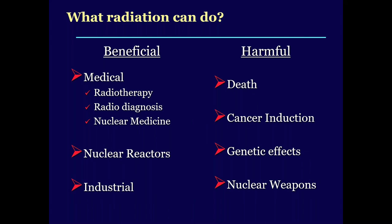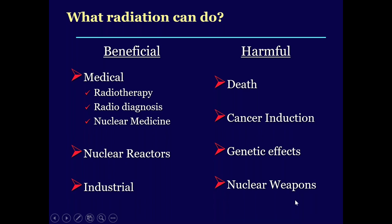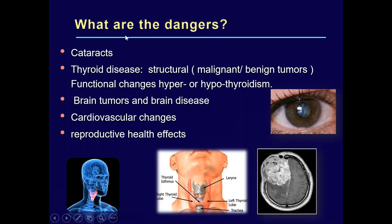Radiation can be beneficial — used in radiotherapy, radio-diagnosis, nuclear medicine, nuclear reactors for producing radioactive isotopes, and industry for testing materials. However, if not used properly, large amounts can cause death, cancer induction, long-term genetic effects, and nuclear weapons. Radiation is dangerous if not monitored with safe practice. Excess doses can cause cataract, thyroid diseases, functional changes, brain tumors, cardiovascular changes, and reproductive health effects.